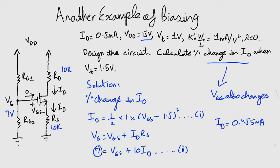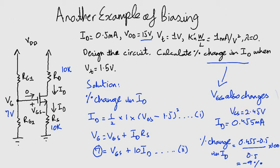Solving them simultaneously gives us the value of ID to be 0.455 milliampere. Therefore, the percentage change in ID will be minus 9 percent. The new value of VGS is 2.45 volts.